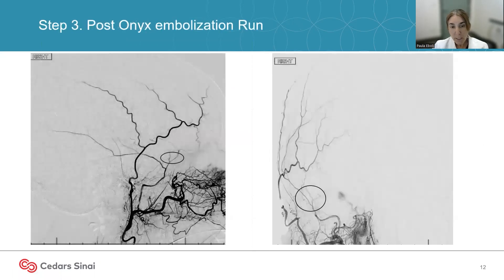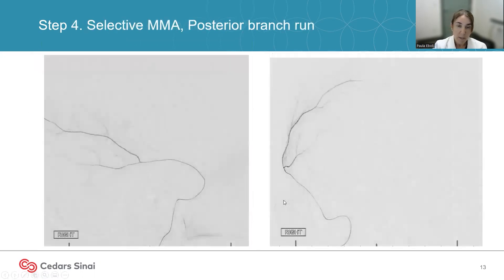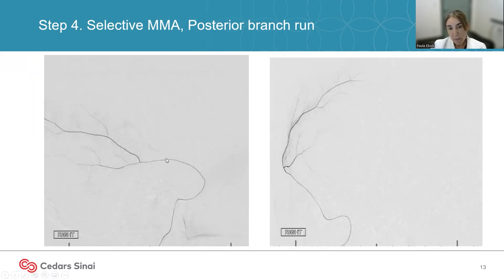On the follow-up run, you can see the anterior frontal branch has been embolized, but filling of the sphenoidal branches and the posterior parietal branch is still visible — confirmed on both lateral and AP views. Next, you want to selectively catheterize the posterior parietal branch. On the selective run, there is somewhat less blush than the frontal branch, though still significant. For this branch, you also want to embolize selectively and avoid the main trunk, ensuring Onyx does not reflux past the origin of the main middle meningeal artery trunk.